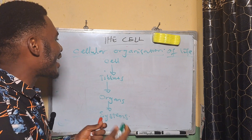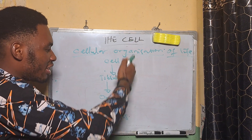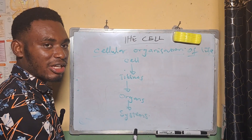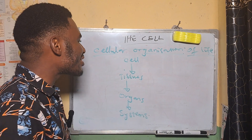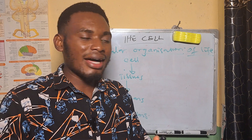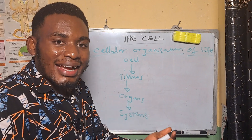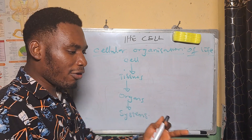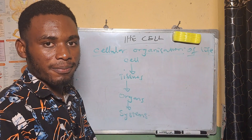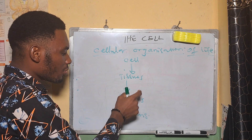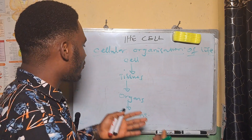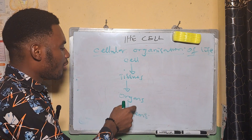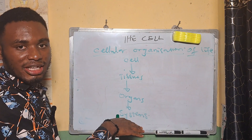Every multicellular organism has this organization in its system: from cell to tissues, from tissues to organs, from organs to systems. Cells that have a specific function aggregate together and form tissues — tissues are made up of similar cells that have the same function. Tissues of the same function come together to form organs, and then organs of the same function come together to form a whole system.